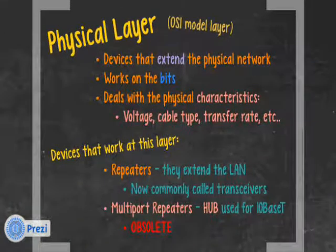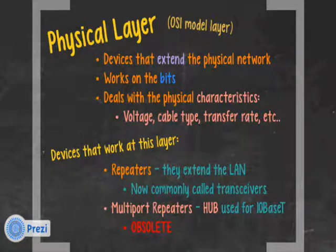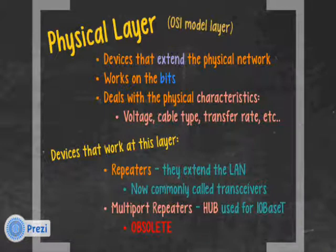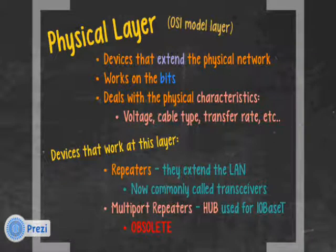Physical layer — OSI model layer. We're going to start at the bottom of the physical layer. Devices that extend the physical network belong on the physical layer. These devices extend the physical network and work on the bits. They don't make any decisions at all. They deal with the physical characteristics: voltage, cable type, transfer rates, etc.